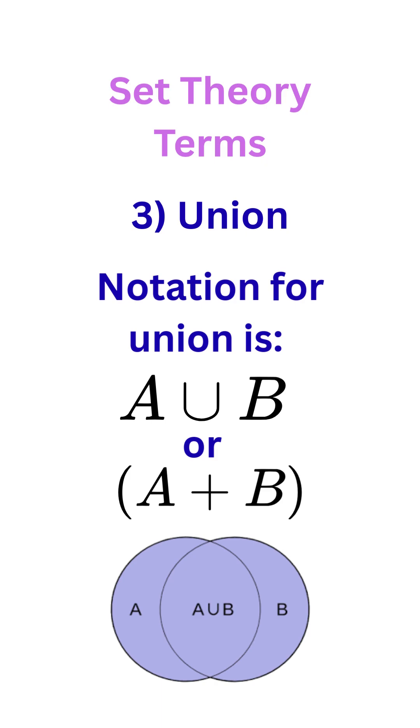There are two forms for the notation of a union, as written here, and the Venn diagram shows how the union is just everything in set A and B, and whatever is common in between the two sets.